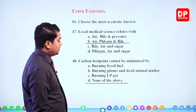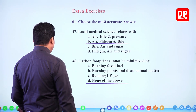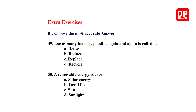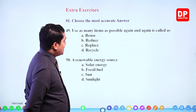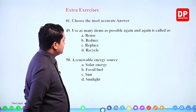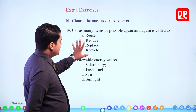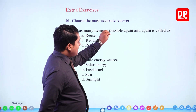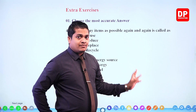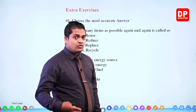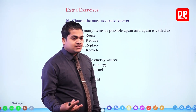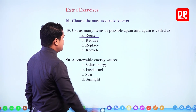Question 49: use as many items as possible again and again is called — reduce, reuse, replace, or recycle. Using items over and over means reuse. So the answer is reuse.